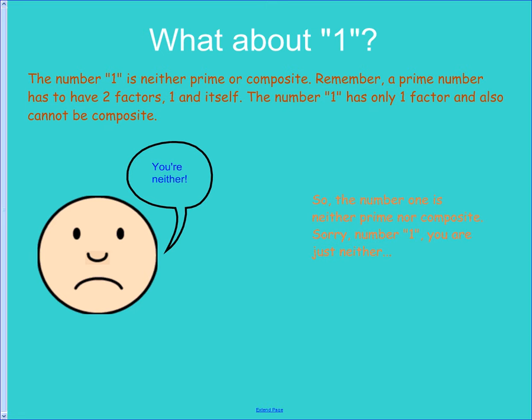So what about 1? Well, sorry. 1, you're neither prime nor composite. Remember, the definition of a prime number is it has two factors, 1 and itself. 1 only has one factor: 1. So the number 1 is considered neither prime nor composite. That will be a test question. Keep that in mind. Is one prime or composite? It's neither. Trick question.